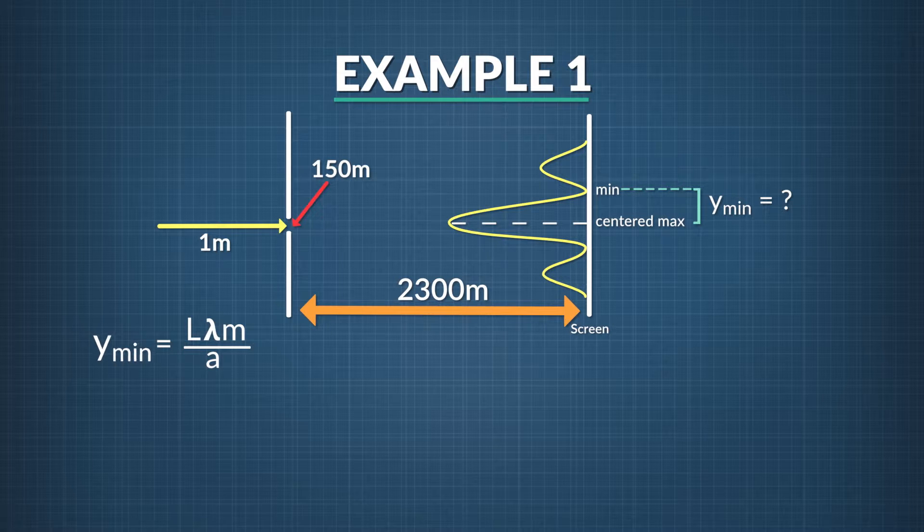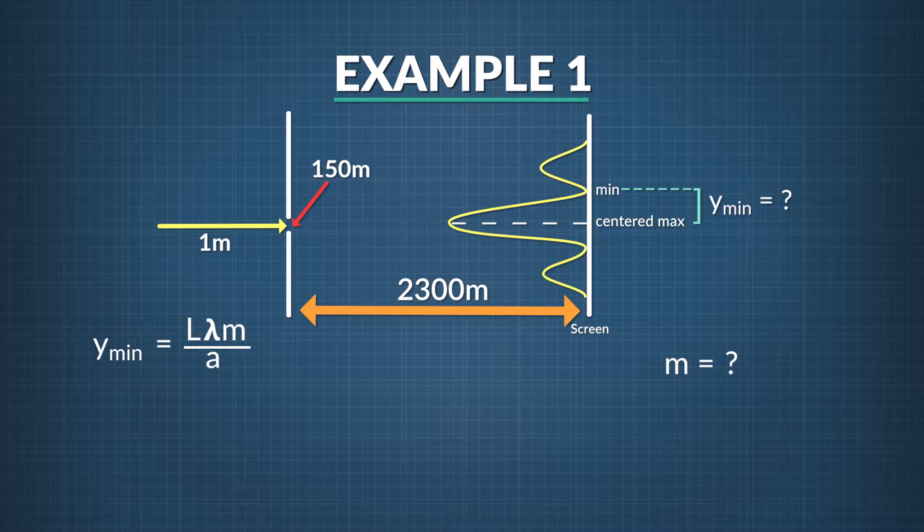We'll use the single slit equation we looked at above to answer this question. The distance of the first minimum point from the center line, y_min, equals the distance from the slit to the backdrop, times the wavelength, divided by slit width, all multiplied by m. But what is m? Since we're asked about the distance of the first minimum point, we know that m is 1 in this case. We're solving for y_min.